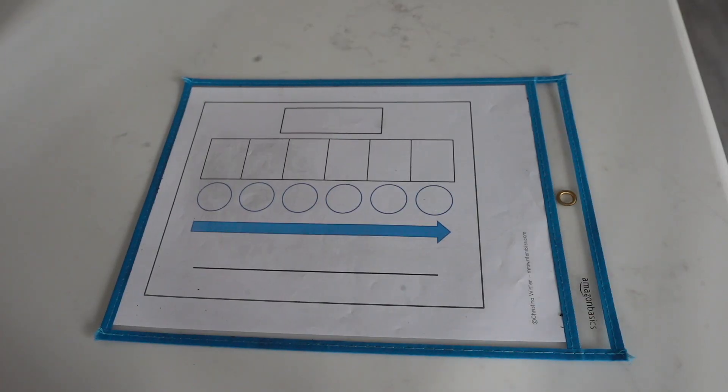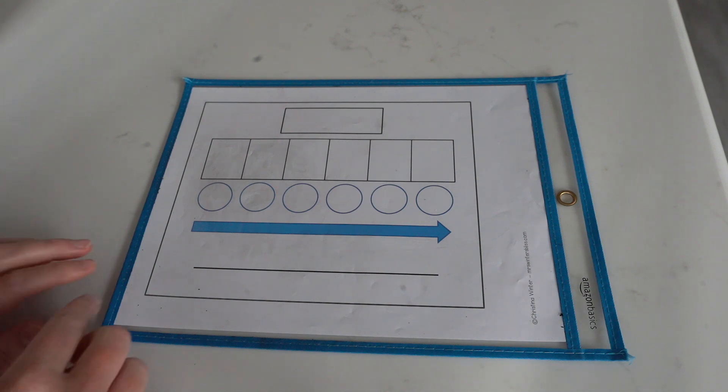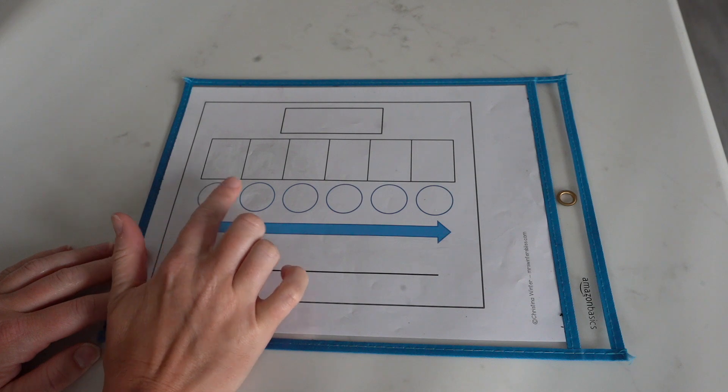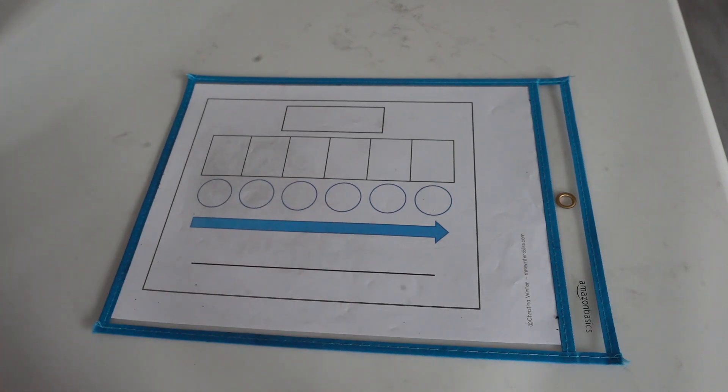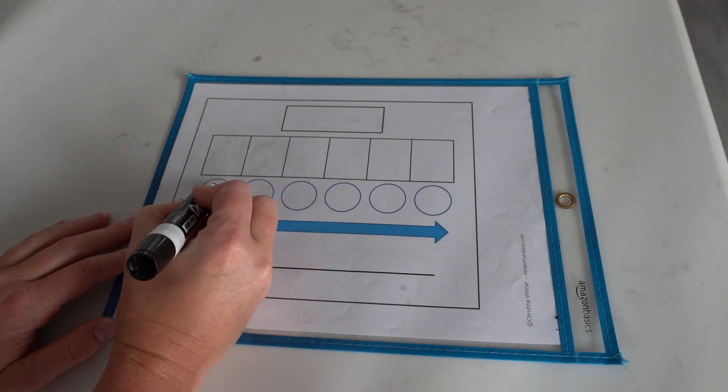Now, we are going to phoneme grapheme map the word 'the'. Let's go ahead and tap the sounds in the word 'the'. There are two sounds, so let's mark it.